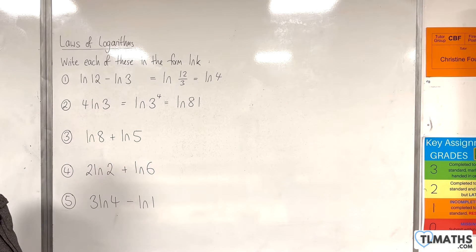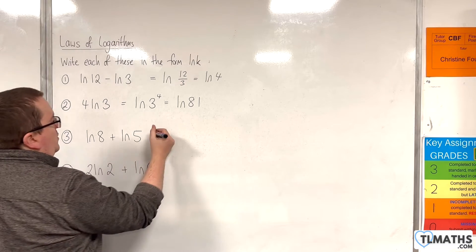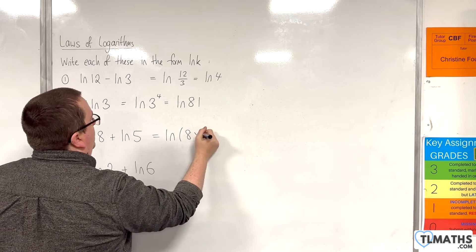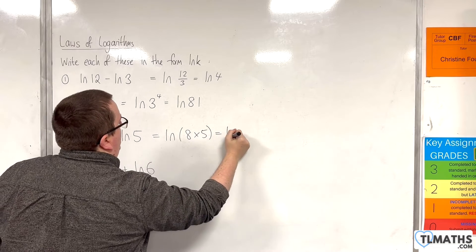For number 3 we have the natural log of 8 plus the natural log of 5. Using the product rule we can write that as the natural log of 8 times 5, which is the natural log of 40.